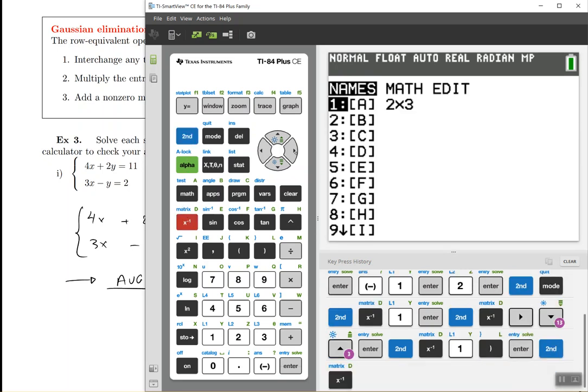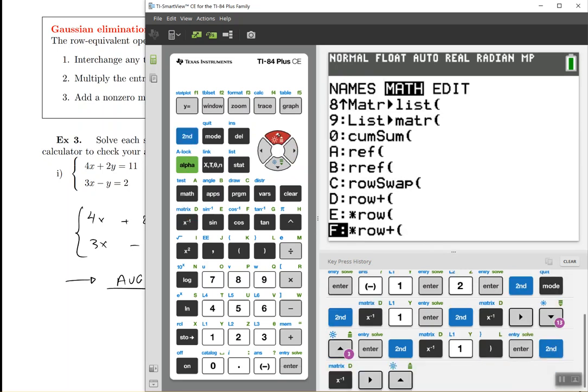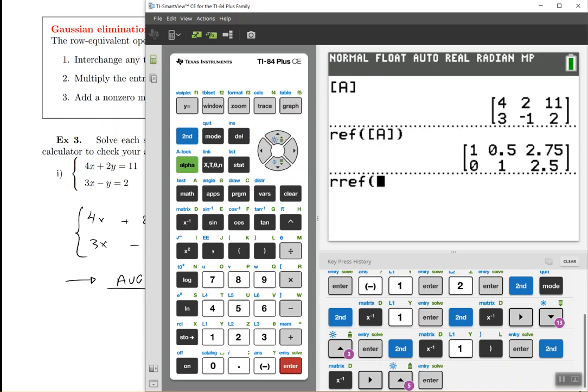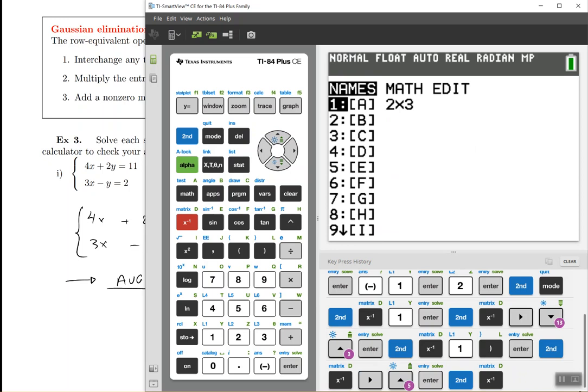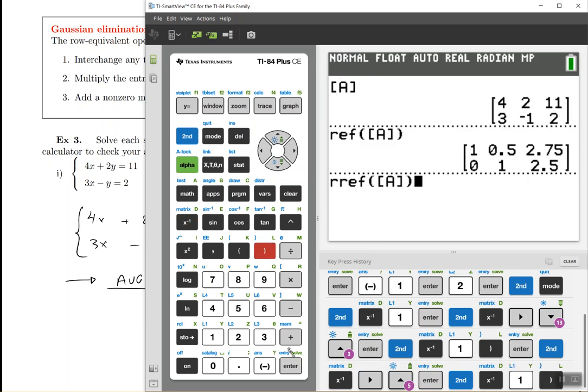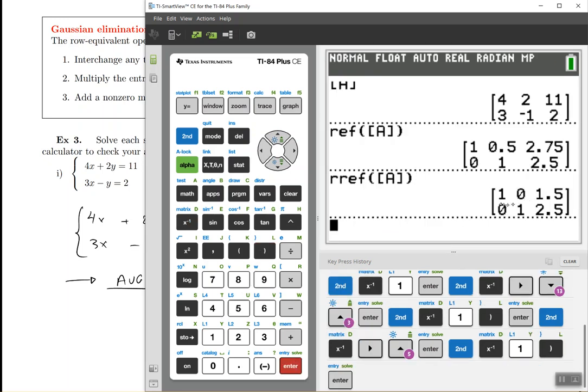Or if we want to have the full solution on the screen, we can go like this: second matrix, then math again, and this time find the RREF option, and then tell the calculator, matrix A again. And this time, it will say 1, 0, 1.5, 0, 1, 2.5. And we'll have to understand what those numbers mean.